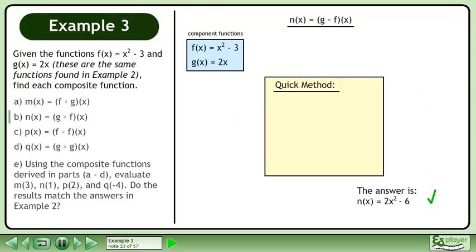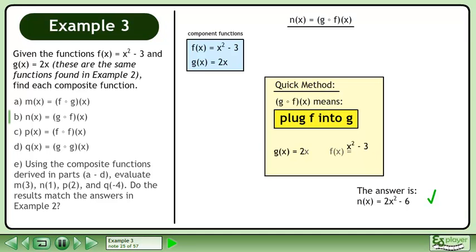We can also use a quick method to find the composite function. g of f means plug f into g. Rewrite both functions and plug f into g. This gives us 2x squared minus 6, the same result we obtained before.